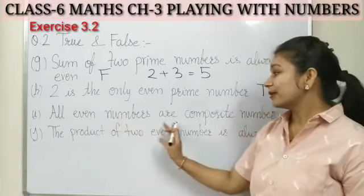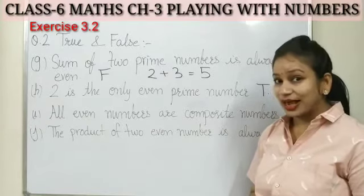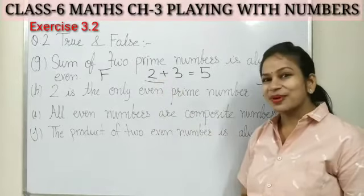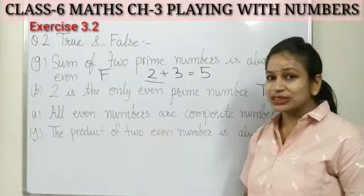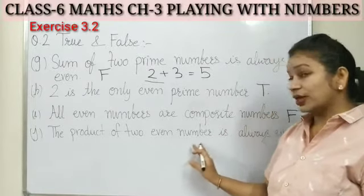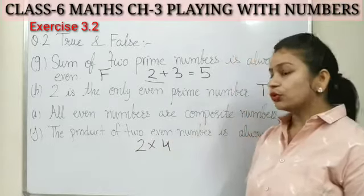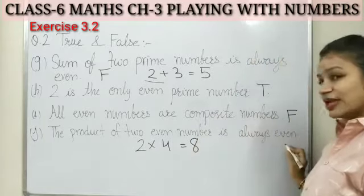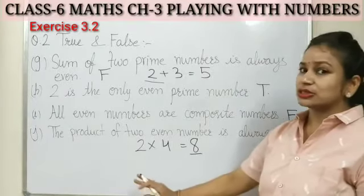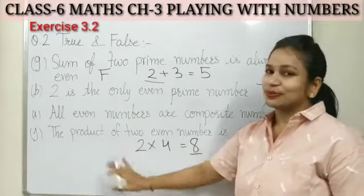Statement I: all even numbers are composite numbers. Is this right? No, because two is an even number but it is a prime number, not a composite number. So not all even numbers are composite. This is a false statement. Statement J: the product of two even numbers is always even. Take two and four — two times four is eight, which is an even number. So when we multiply two even numbers, the product will always be even. This statement is true.